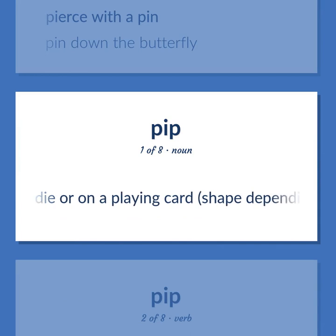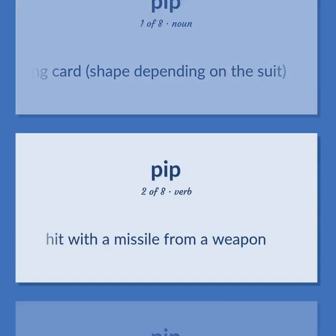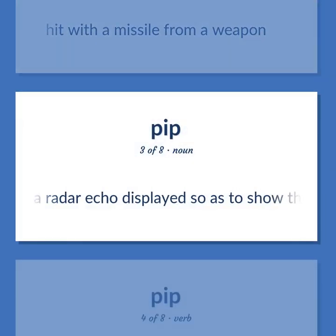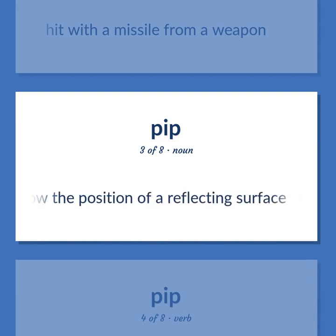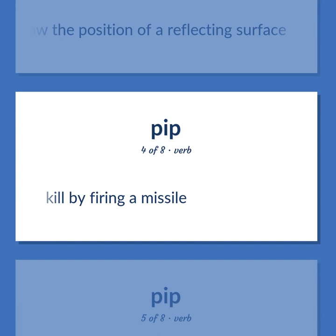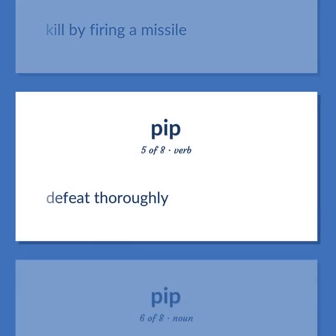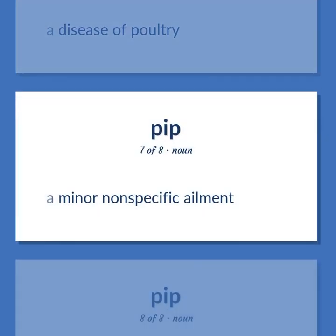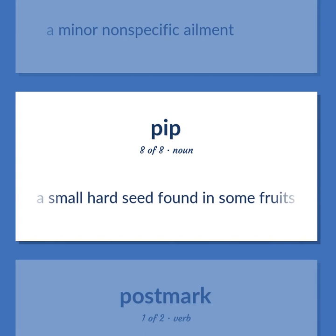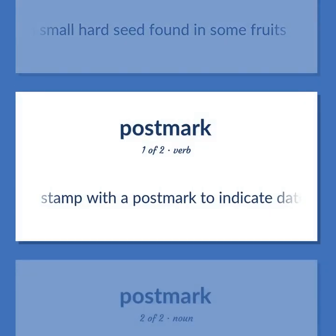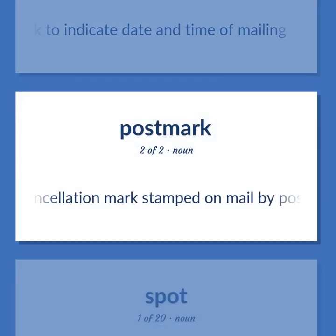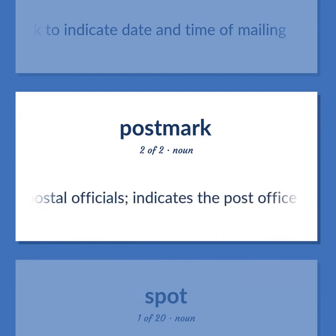Spot: a mark on a die or on a playing card, shape depending on the suit. Hit with a missile from a weapon. A radar echo displayed so as to show the position of a reflecting surface. Kill by firing a missile. Defeat thoroughly. A disease of poultry. A minor nonspecific ailment. A small hard seed found in some fruits. Stamp with a postmark to indicate date and time of mailing. A cancellation mark stamped on mail by postal officials, indicating the post office and date of mailing.